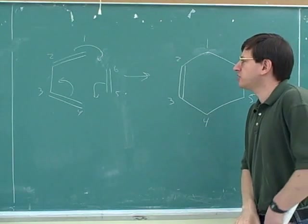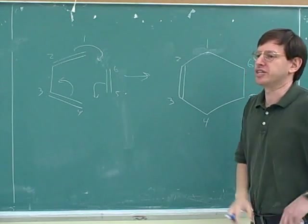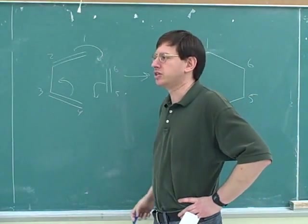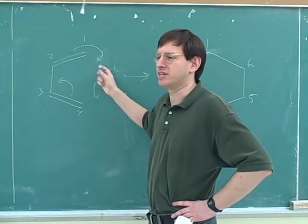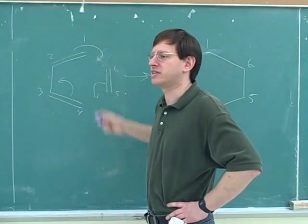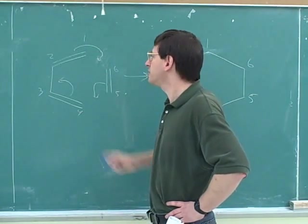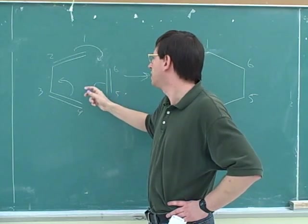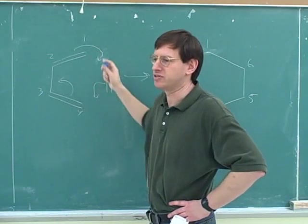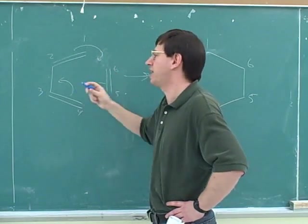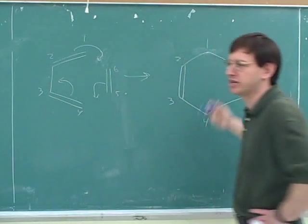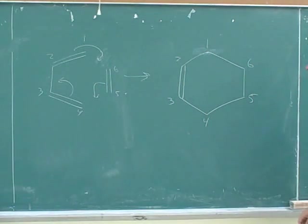By the way, what about changing charges? Well, this is the one case where we don't change any charges because here we have a cycle of arrows. There is no initial tail and no final head because every arrow is pointing to the tail of the next arrow. So when you have a cycle of arrows, you don't have to change any charges — there's no initial tail or final head.